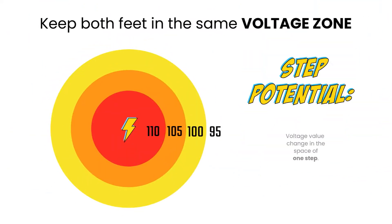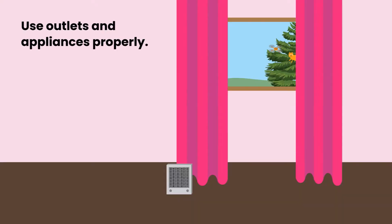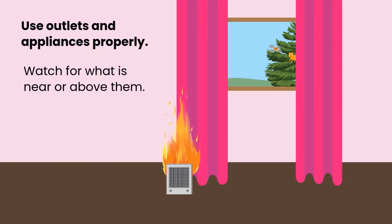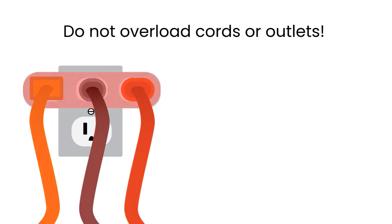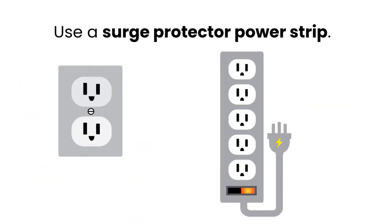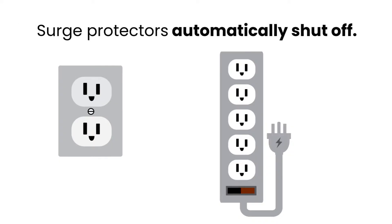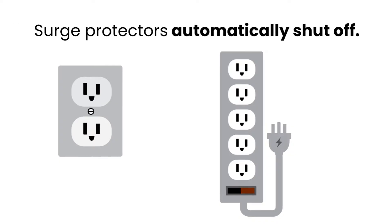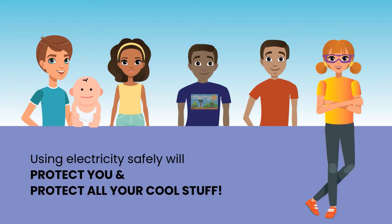Fires can start if outlets and appliances aren't used properly. A space heater too close to a curtain or furniture can cause a fire. Overloaded cords or overloaded outlets can melt. Use a surge protector power strip. They automatically shut off if there is too much draw or if there is a power surge. It protects what's plugged into the outlet as well as protecting you.